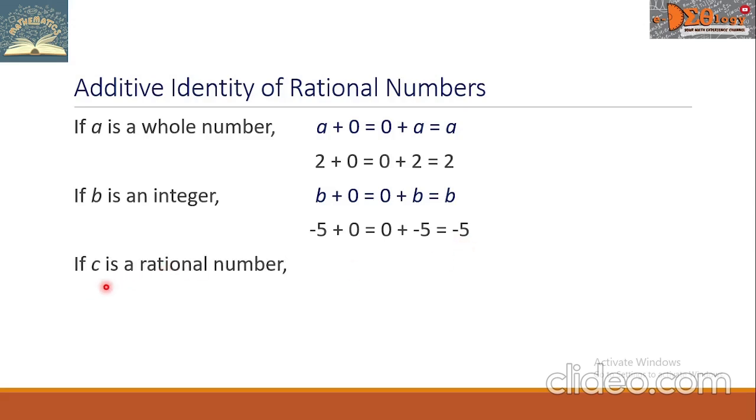Next, if c is a rational number, c plus zero equals zero plus c. Simply, this is c. Example, negative two over seven plus zero equals zero plus negative two over seven. And the answer is negative two over seven.